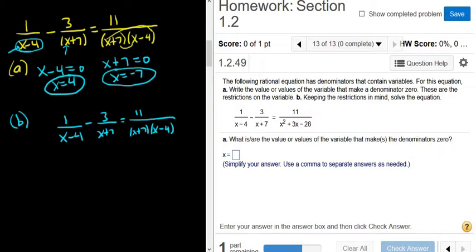So we'll start by clearing the fractions. So to get rid of the x minus 4, we have to multiply by x minus 4. And to get rid of the x plus 7, we have to multiply by x plus 7. And then we do the same thing to the other side. So x plus 7, x minus 4, that's so small.